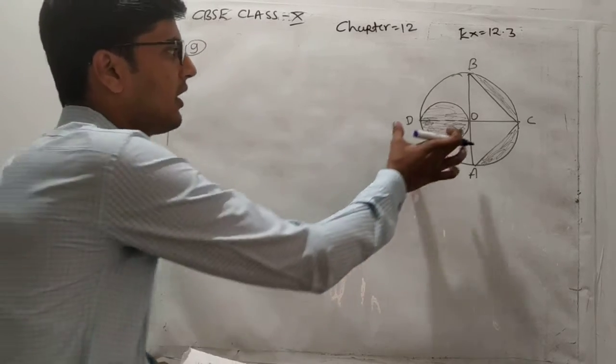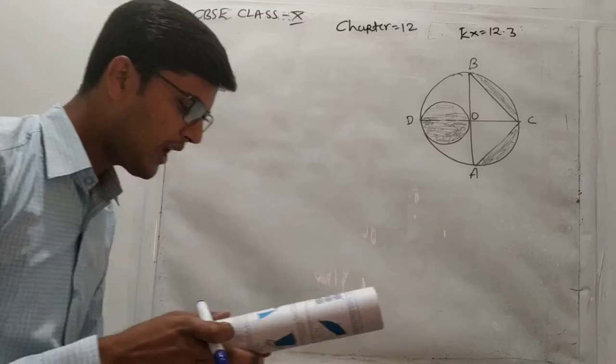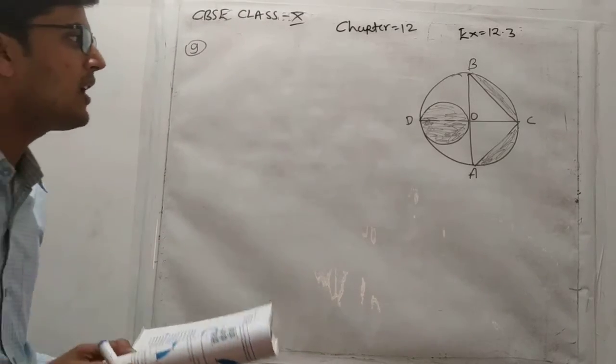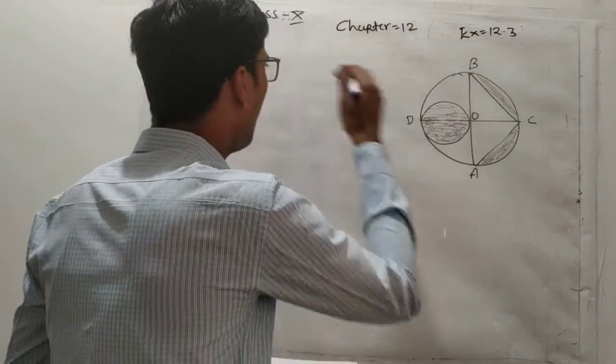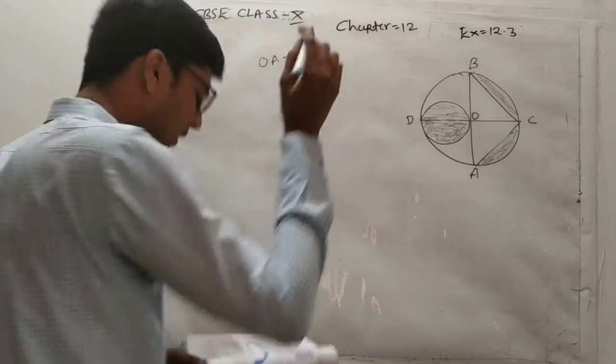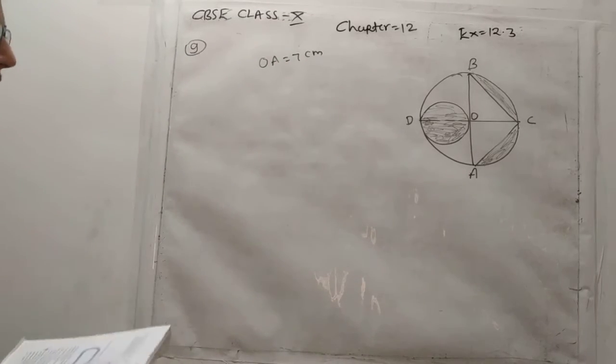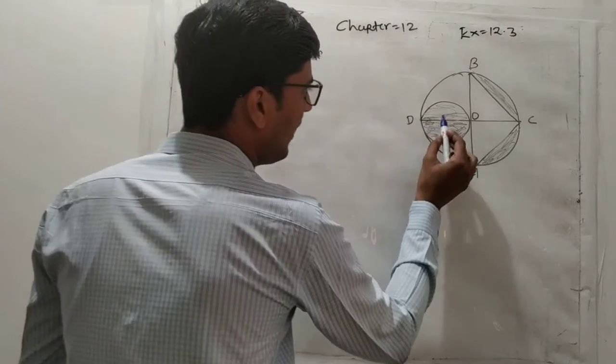OD is the diameter of the smaller circle. If OD is equal to 7 cm, find the area of the shaded region.